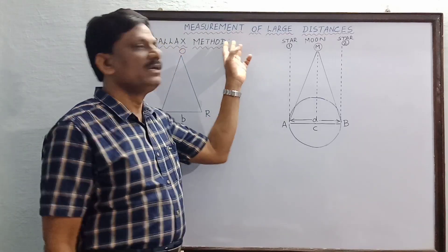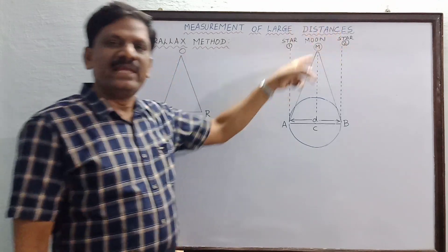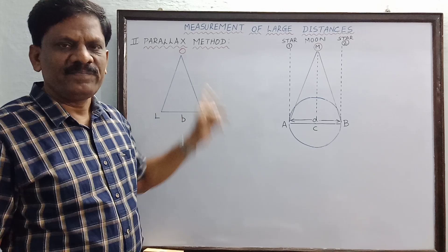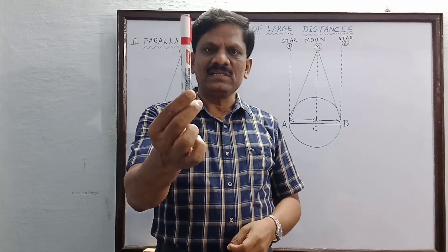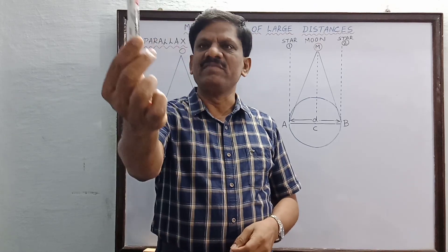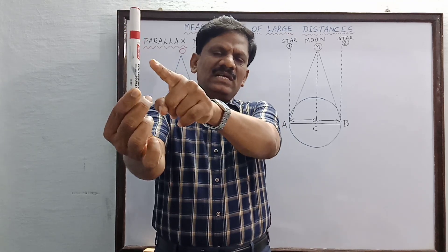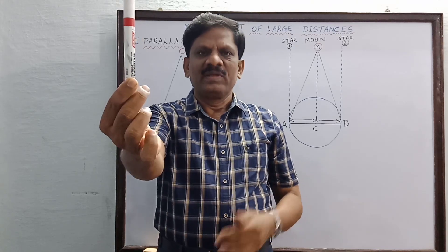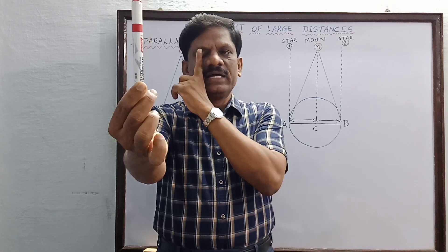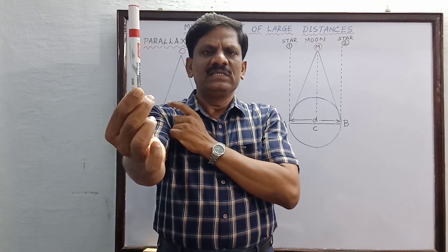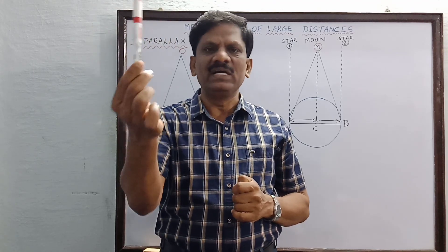Hi students, now we are going to discuss the second method of measurement of large distances. The name of the method is the parallax method. Let us try to understand what is meant by parallax. I will consider a pen which is kept in front of me at some distance. I observe the position of the pen keeping the wall as the background, first by closing the left eye, next by closing the right eye. I find that the position of the pen changes whenever I close one eye and observe by the other eye.